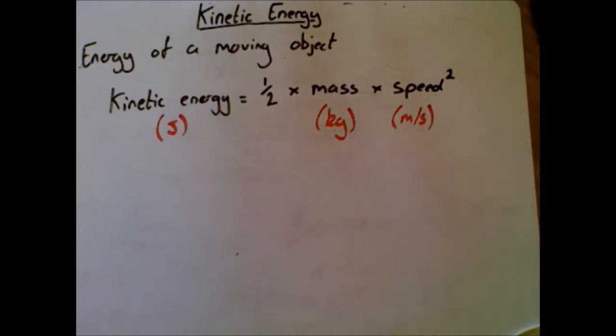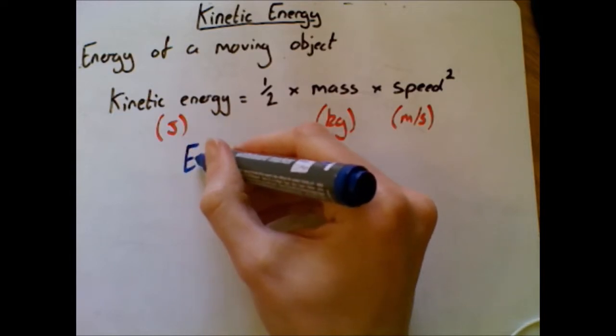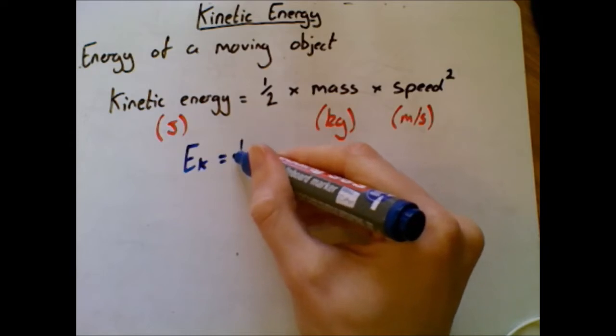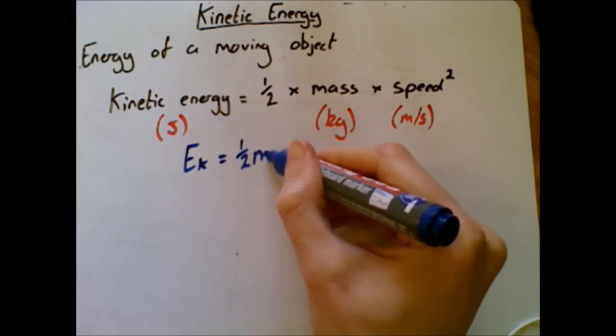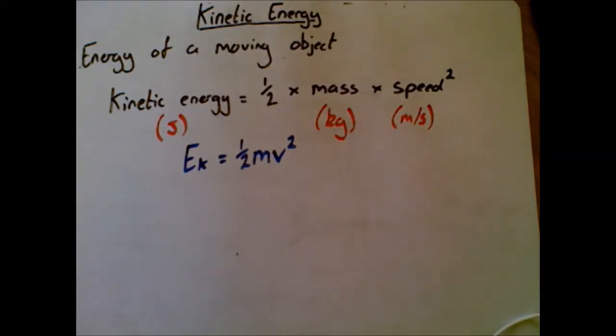Now if we wanted our formula there in symbols, a little bit like last time we had Ep for potential energy, kinetic energy is Ek like that, equals half times mass times speed squared. Now remember, speed is given the letter v - a little bit confusing because it kind of stands for velocity - but if you see that half mv squared, that is just kinetic energy.